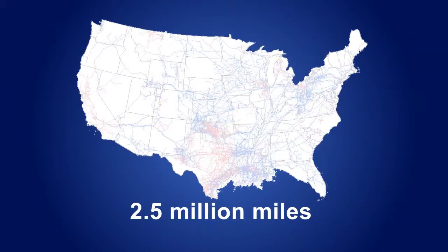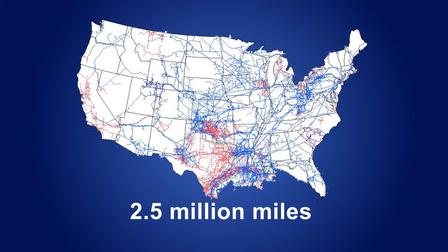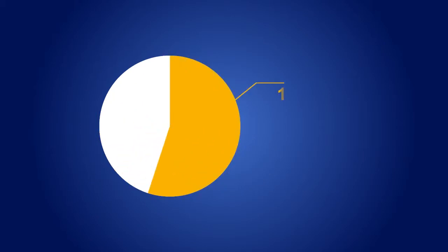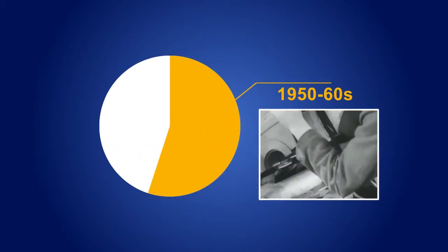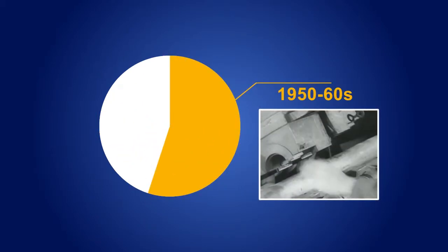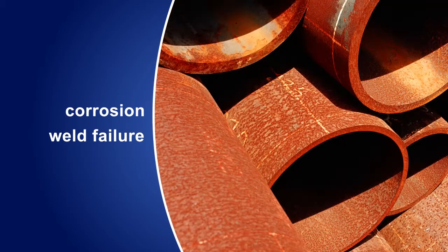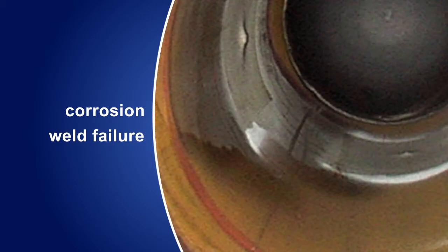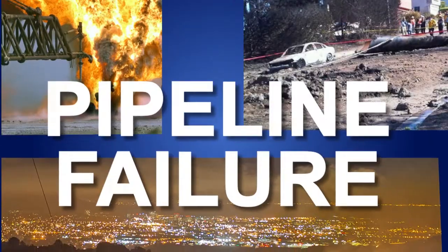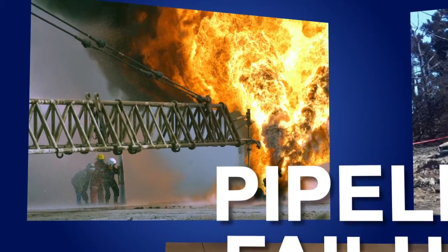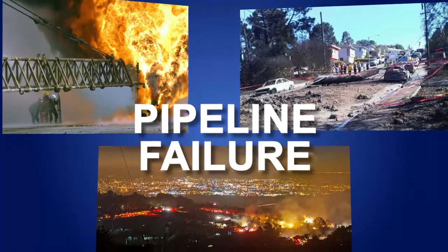America has two and a half million miles of oil and gas distribution pipelines crisscrossing the nation, and more than 50% of these were constructed in the 1950s and 60s. The age of pipelines is of concern because corrosion and weld defects cause failures over time, and pipeline failures can be catastrophic, causing deadly explosions and hazardous spills.